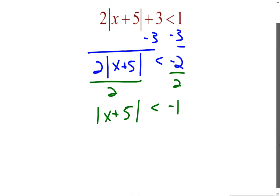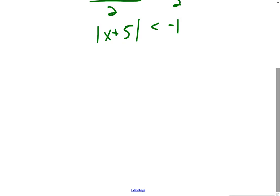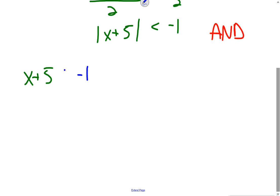This is when we'd break it into two inequalities. The absolute value is less than — that tells us we have an AND compound inequality. Everything inside the absolute value sign stays as is. One time, we keep the number on the right as is — negative 1 — so the inequality symbol stays the same. The other time, we take what's inside the absolute value, leave it as is, but switch the sign on the number: negative 1 becomes positive 1, and we flip the inequality symbol.